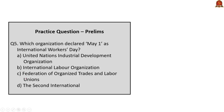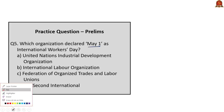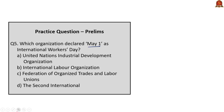Fifth and final prelims question: Which organisation declared May 1 as International Workers Day? This is a direct question from the analysis. The Second International is the organisation that declared May 1 as International Workers Day. The correct answer is option D, the Second International.